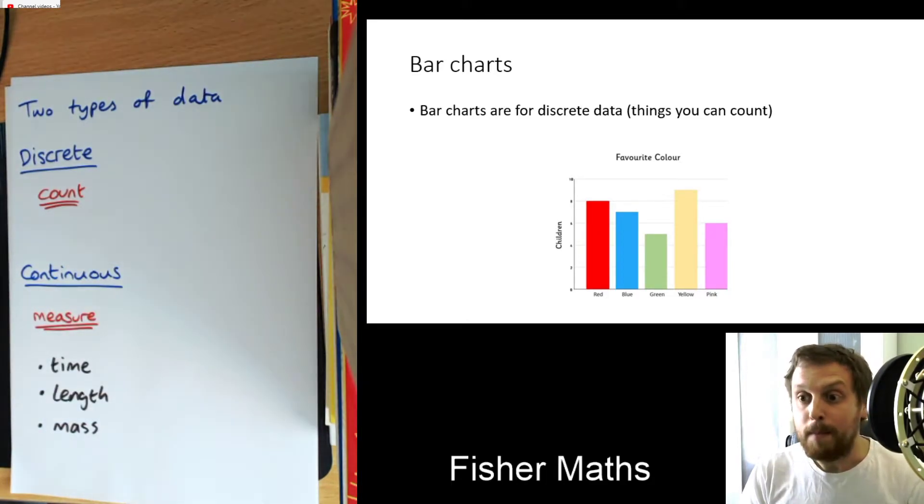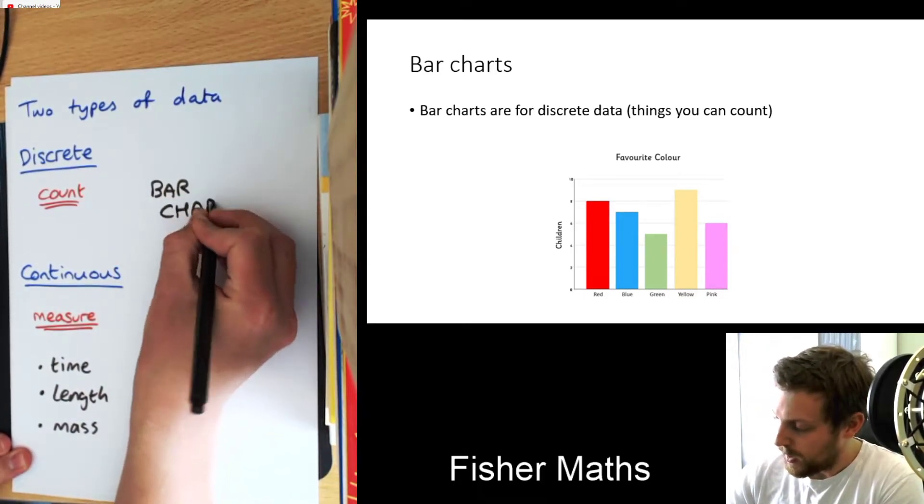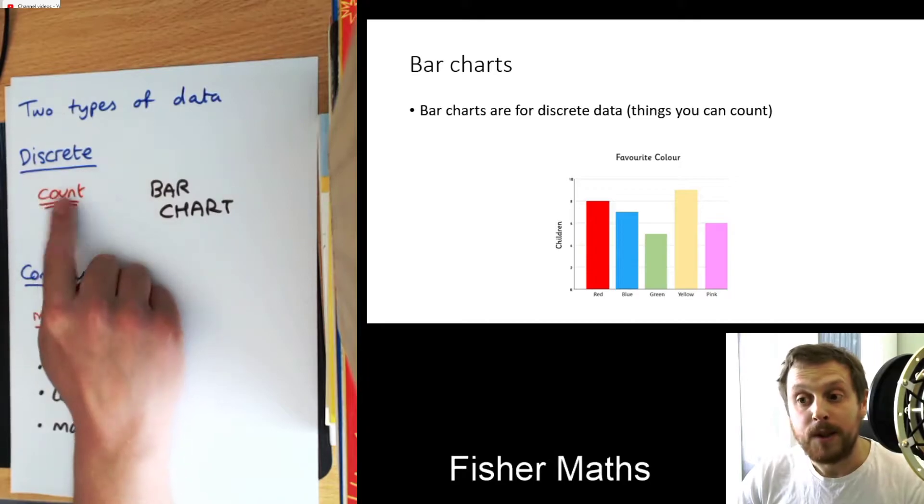When I've got this sort of data, I might use a bar chart. So if you look at the bar chart on the PowerPoint, we have counted how many children said red was their favourite colour. We counted how many children said blue, green, yellow, and pink. So this is what a bar chart is used for. Discrete data.